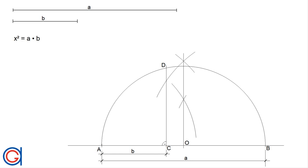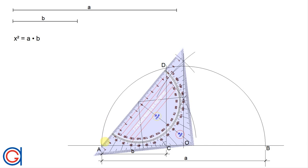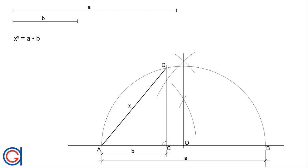And now the only remaining step is to join points A to point D and this length will be the length X, which is the geometric mean of the two given lines A and B.